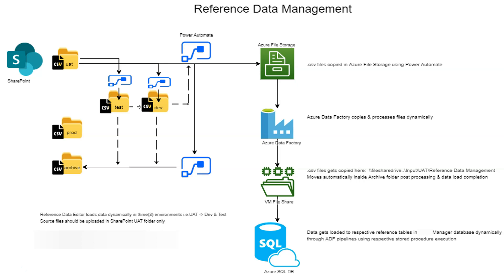Once it's confirmed that the correct data is being reflected, the same file can be uploaded to the prod folder in SharePoint so the same process executes in production. The file gets deployed into the Azure SQL Server table and is finally reflected in the prod report or cube. Let me know in the comments if you'd like a detailed video on any of these components — Azure Data Factory pipelines, Power Automate flows, or the SQL Server loading process. Thank you guys, see you in the next show.